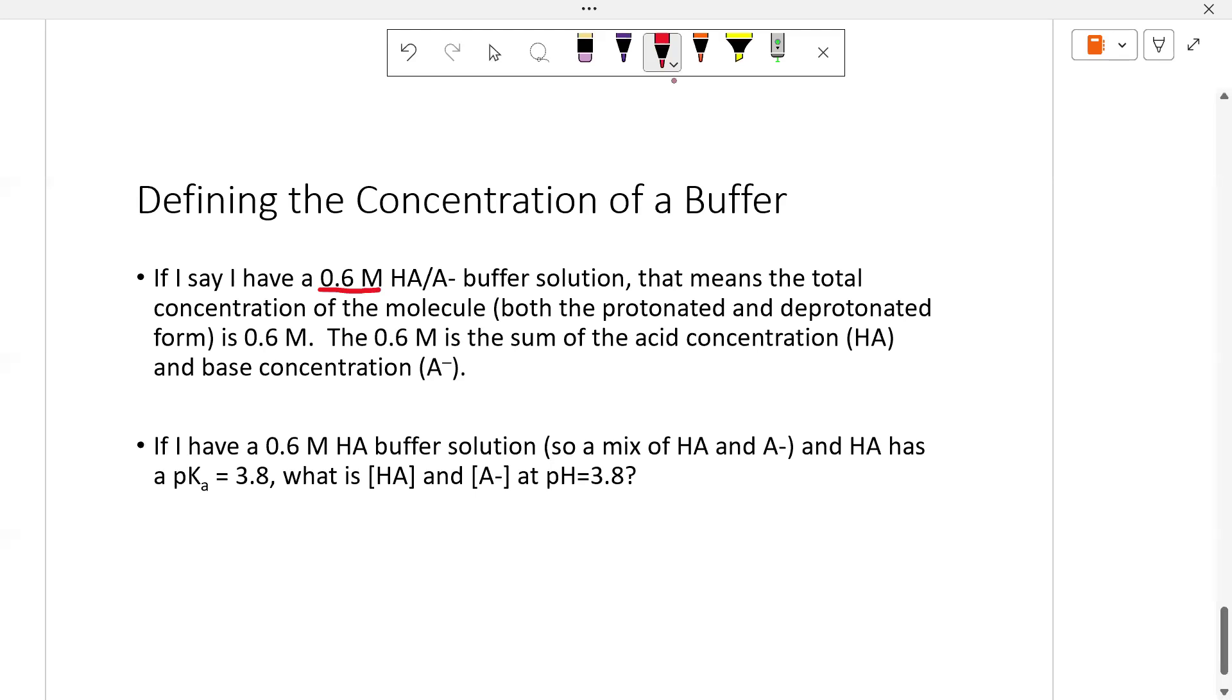So let's look at this example. If I have 0.6 molar HA buffer solution, and I know that whatever this weak acid is has a pKa of 3.8, I want to find that concentration when the pH is 3.8. So when you look at this, you're going to say, you know what? I know when pH equals pKa, HA has to equal A minus. And if they have to tally up to be 0.6, they must both be 0.3 molar. In the next video, we will look at how buffers actually do work to limit changes in pH.